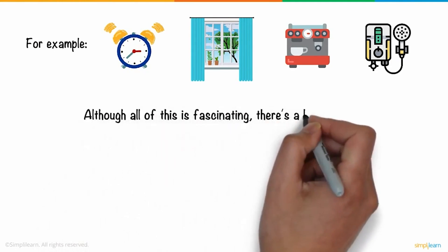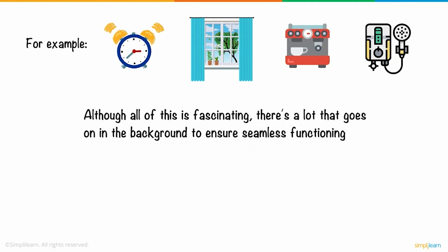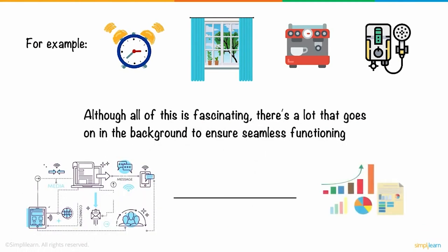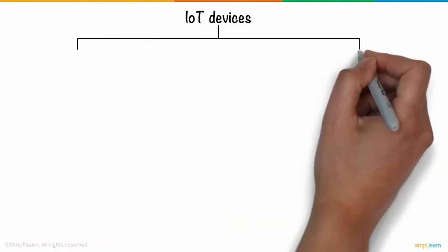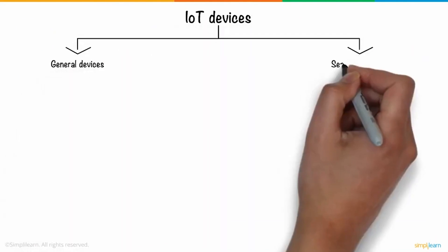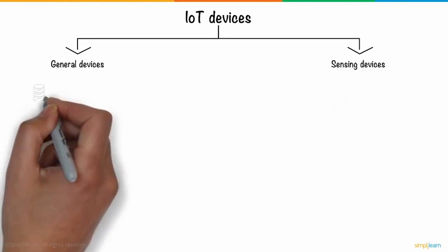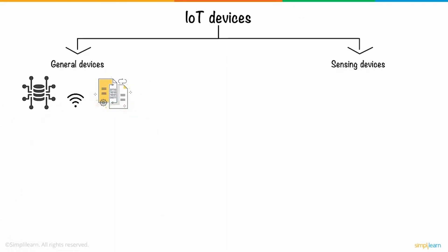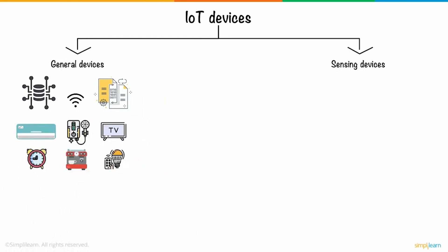Although all of this is fascinating, there's a lot that goes on in the background to ensure seamless functioning. From effective communication between devices to accurate processing of the data received, a lot of components are involved. In the context of IoT devices, hardware can be classified into general devices and sensing devices. The general devices are the main components of the data hub and information exchange, connected either by wired or wireless interfaces. Home appliances are a classic example of such devices.